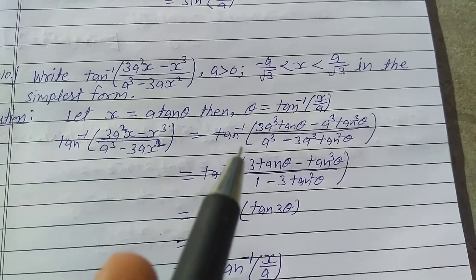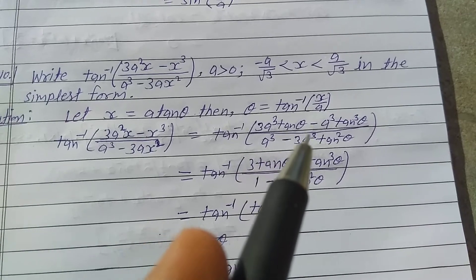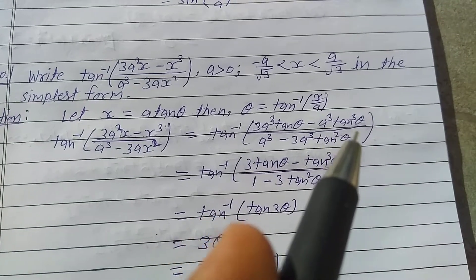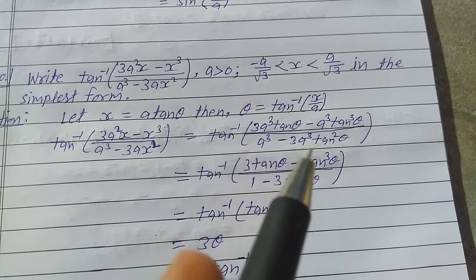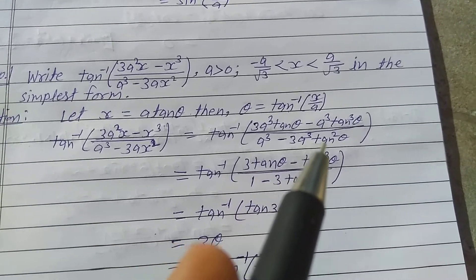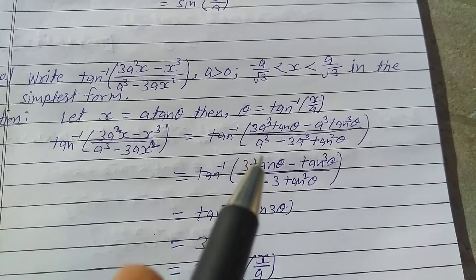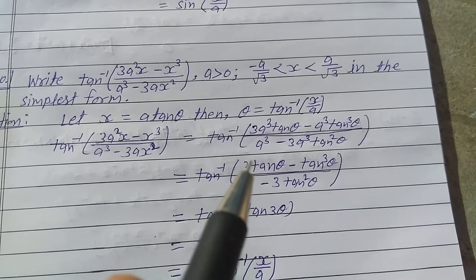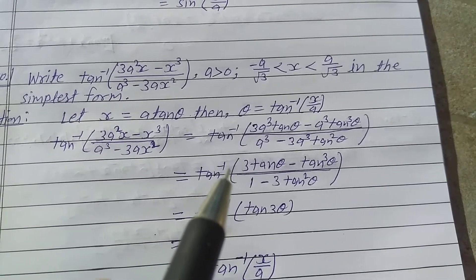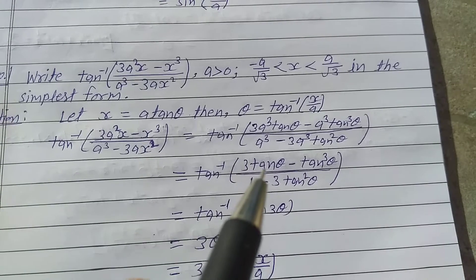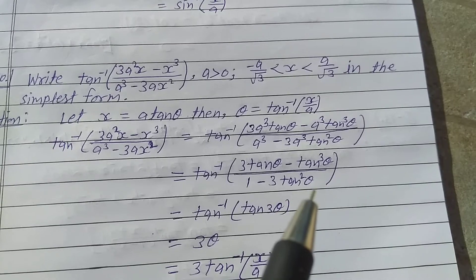So this equals tan⁻¹ of (3a³·tan(θ) minus a³·tan³(θ)) upon (a³ minus 3a³·tan²(θ)). Take common a³ in both numerator and denominator and cancel out a³, so it equals tan⁻¹ of (3tan(θ) minus tan³(θ)) upon (1 minus 3tan²(θ)).